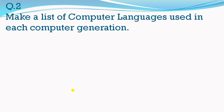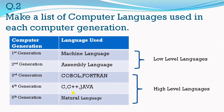Second question: make a list of computer languages used in each computer generation. We all know in each different generation they use different languages. First generation: machine language. Second generation: assembly language. Third generation: COBOL, Fortran. Fourth generation: C, C++, Java. Fifth generation: natural languages. These are basically high level languages. The category is: these are high level languages and these are low level languages.